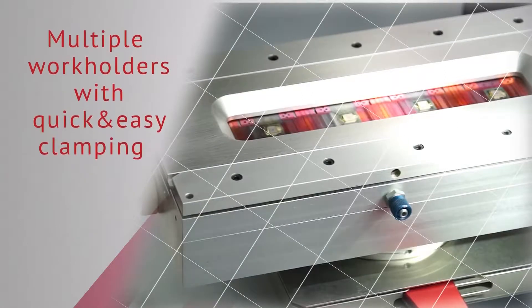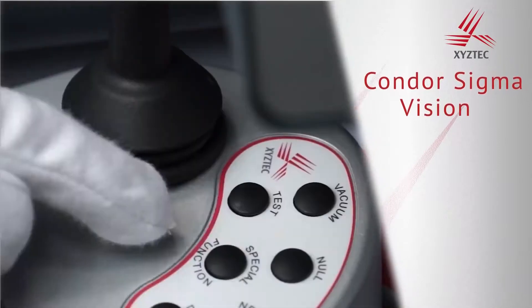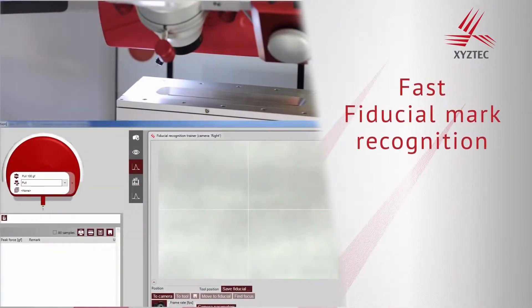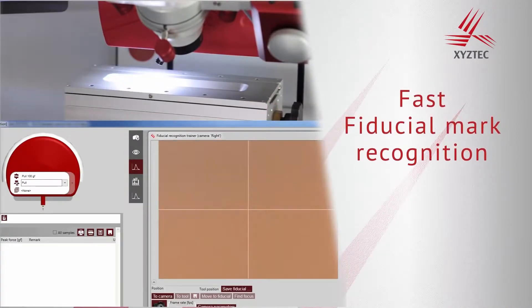The Sigma is equipped with a professional vision system. It is optimized for fast fiducial mark recognition. The vision system removes operator influence and it will correct the positional errors.